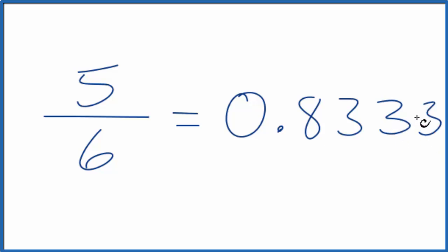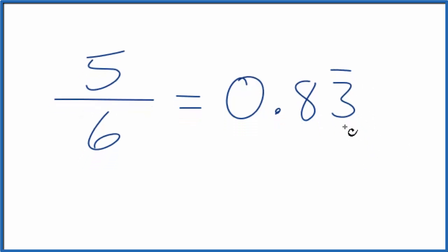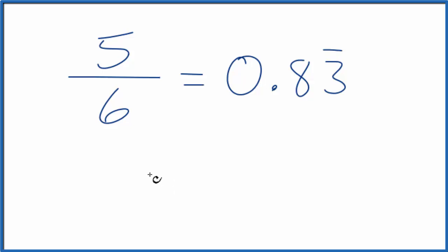Let's write it like this. Just 3 with a bar over it to show it repeats. So that's one way to do it. You could also do this longhand. Essentially we're saying what is 5 divided by 6? What is the decimal for 5 divided by 6? Let's do this longhand.